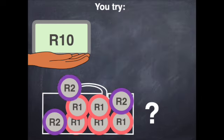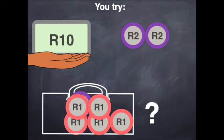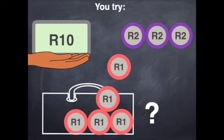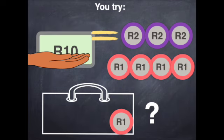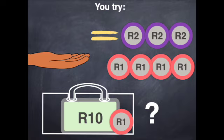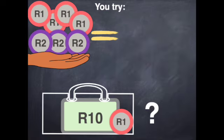The only way to do this one is to use all the 2 rands which gives you 6 rand and then 4 of the 1 rand coins to make it 10 rand. You still have 11 rand in your purse and I have 10 rand's worth of coins in my hand.